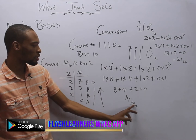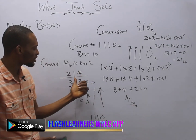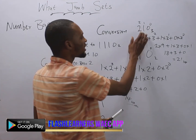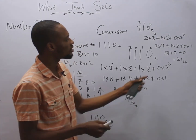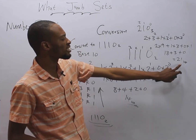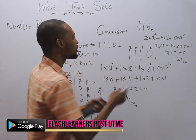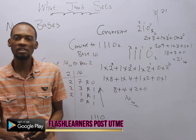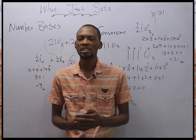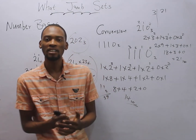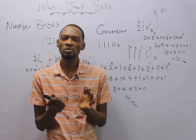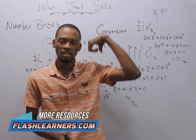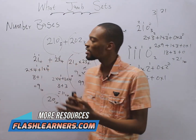Look — we originally had one one one zero in base two and converted to base ten to get fourteen. Converting fourteen back from base ten to base two gives us one one one zero — which confirms we are correct. Similarly, if you are given twenty-one in base ten and asked to convert to base three, you keep dividing by three and recording remainders until you reach zero. If you are given other bases and asked to add, multiply, or subtract, the easiest approach is to first convert to base ten, perform the operation, then convert the answer back to the required base.